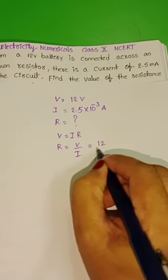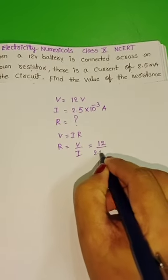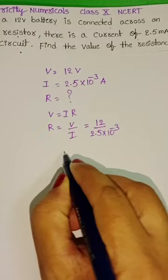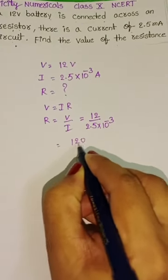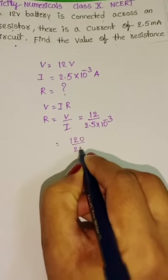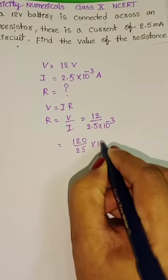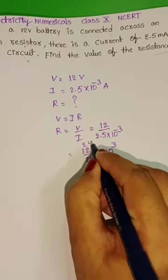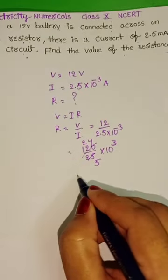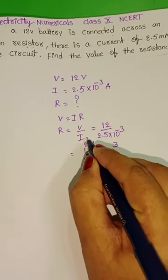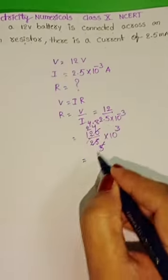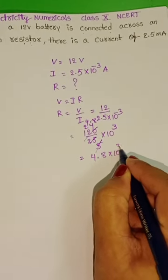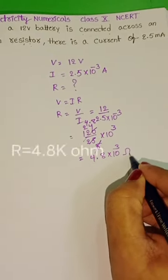Substituting: R = 12 divided by 2.5 into 10 power minus 3, which gives 120 by 25 into 10 power 3. Simplifying: 4.8 into 10 power 3 ohms. Thank you.